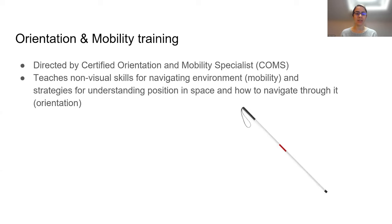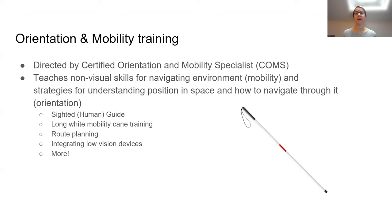Orientation and mobility training in the United States is directed by a certified orientation and mobility specialist. It teaches non-visual skills for navigating the environment — mobility — as well as strategies for understanding your position in space, which is the orientation piece. Mobility relates to actively moving through space, while orientation relates to constructing mental maps and finding your way. Strategies range from sighted or human guide, where a helper assists the patient using specific techniques for better support and posture, to using a long white mobility cane to sweep the ground and detect changes in threshold and low-lying obstacles.